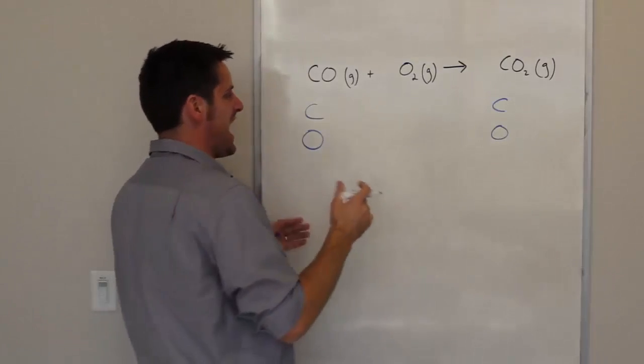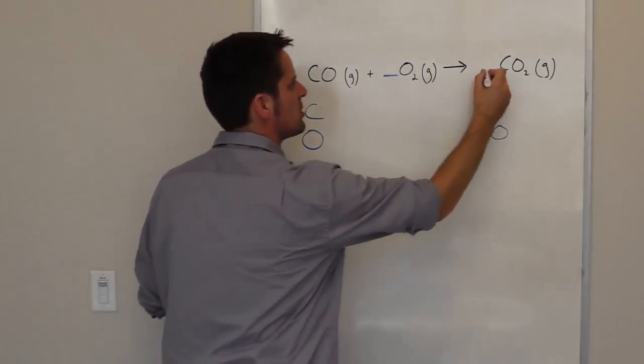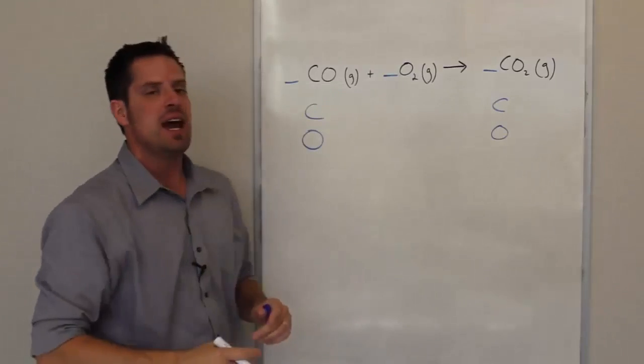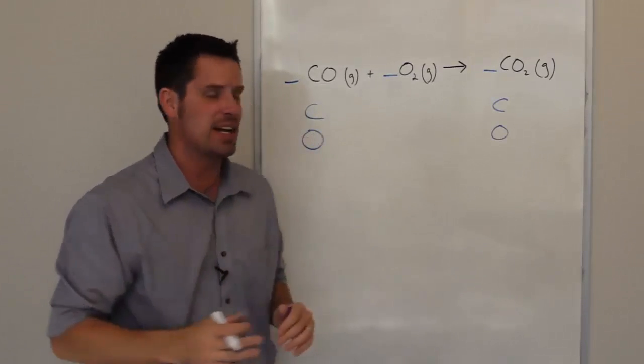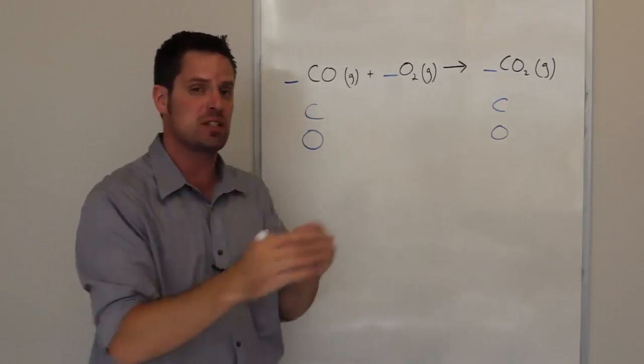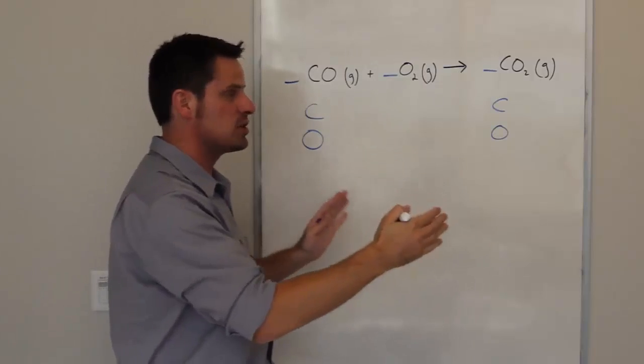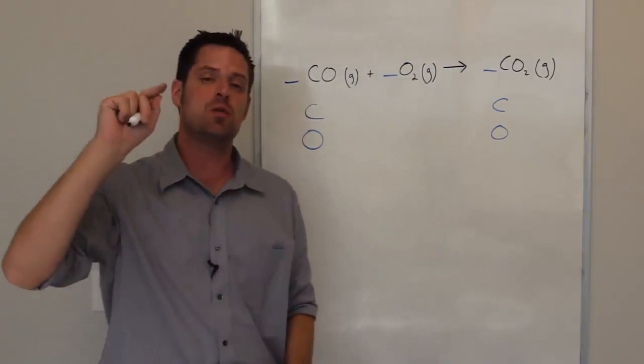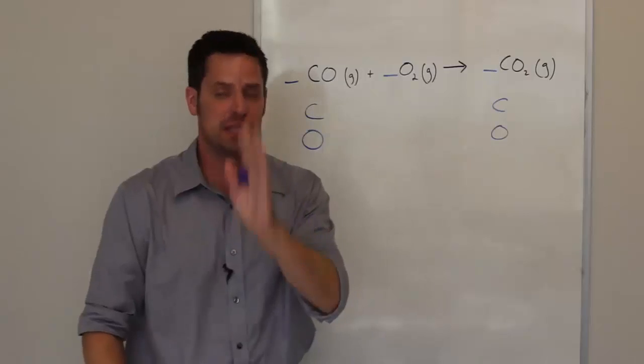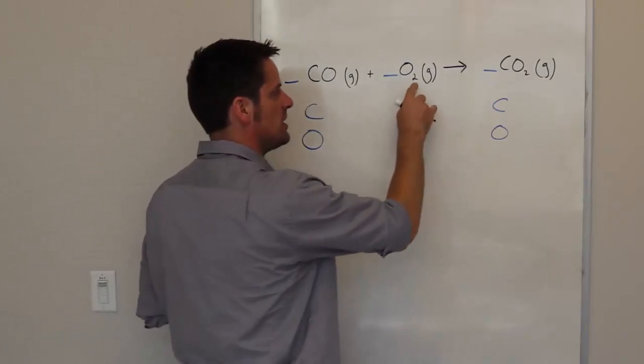Then what you have to do is you have to add coefficients, that is, numbers to the left of each of these substances, and you have to do it in whatever way is necessary in order to make the same number of carbons on both sides and the same number of oxygens on both sides total. One thing you cannot do, please, please remember this. You cannot change these subscripts.